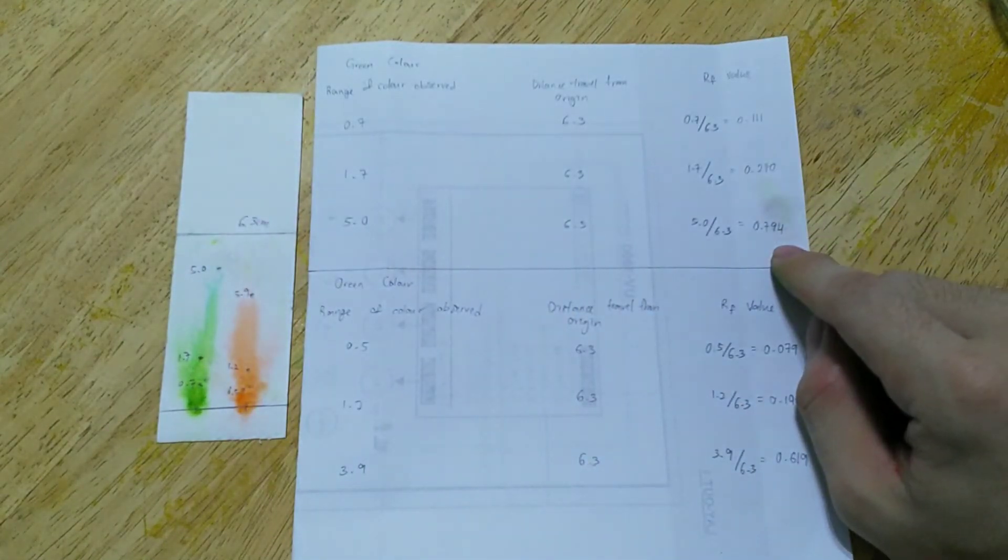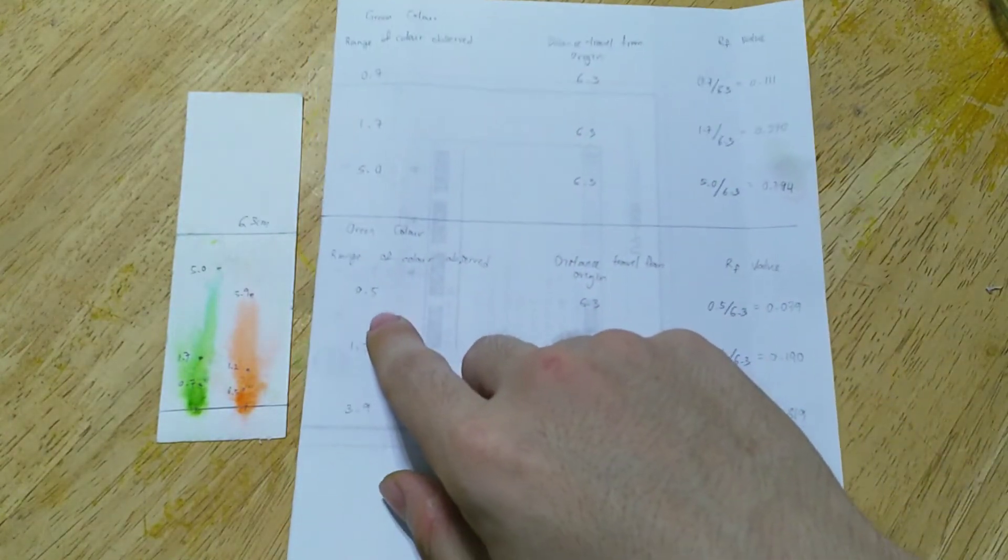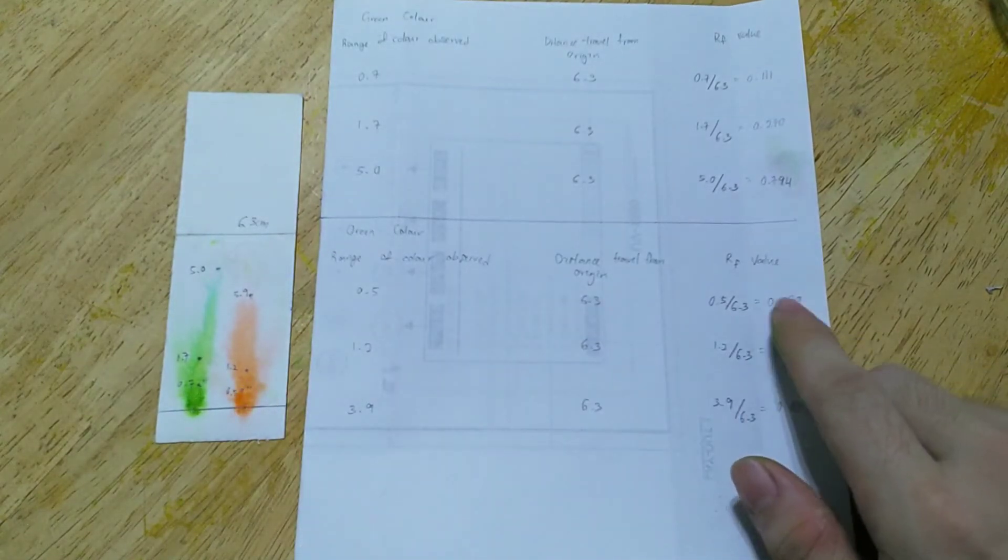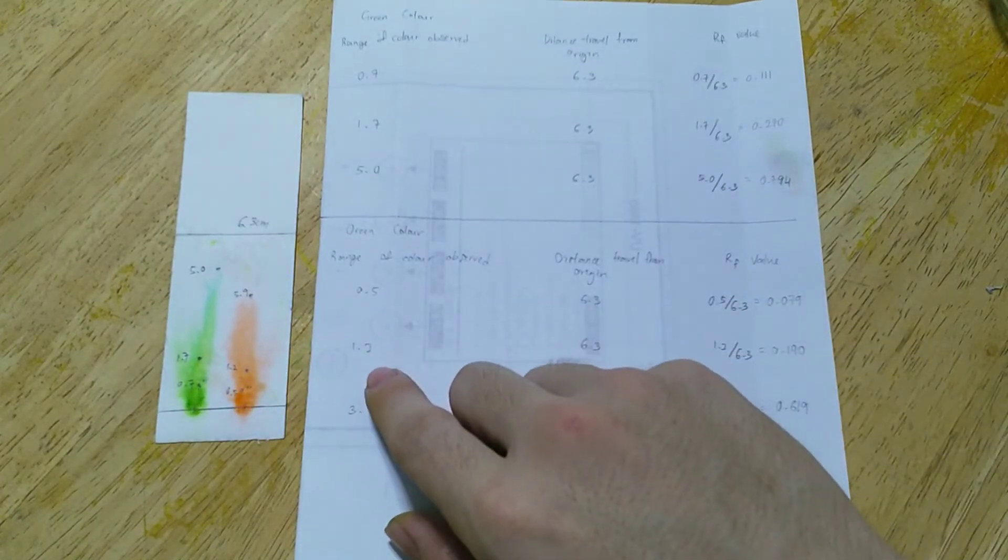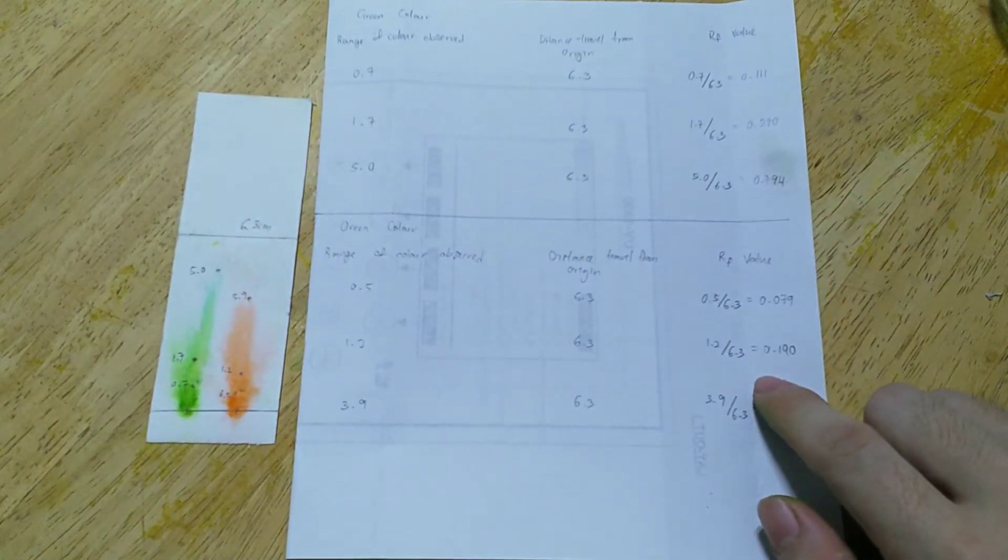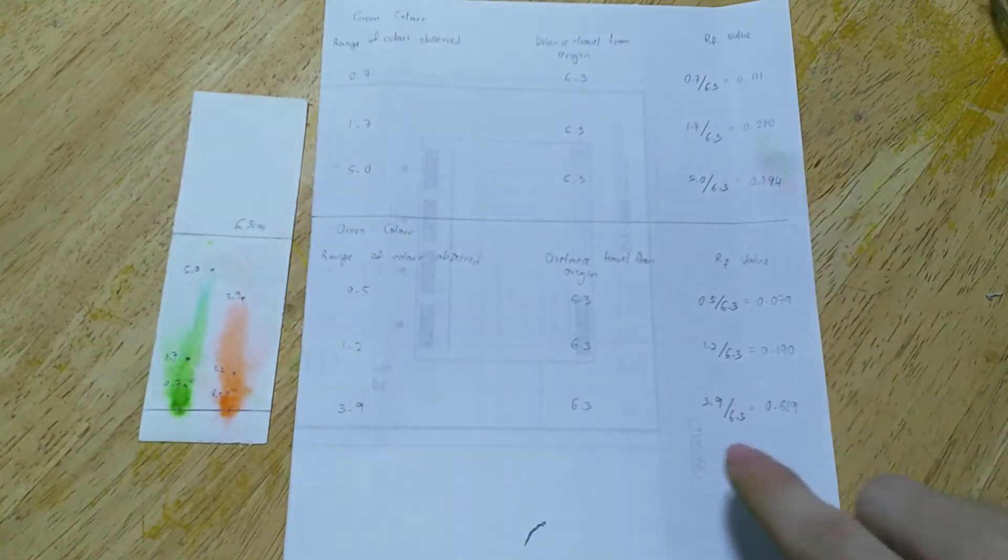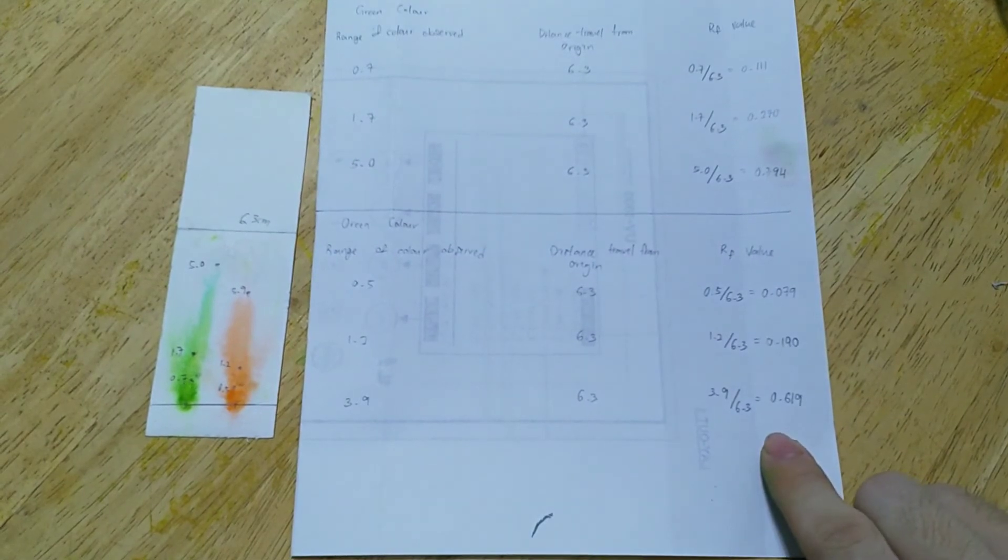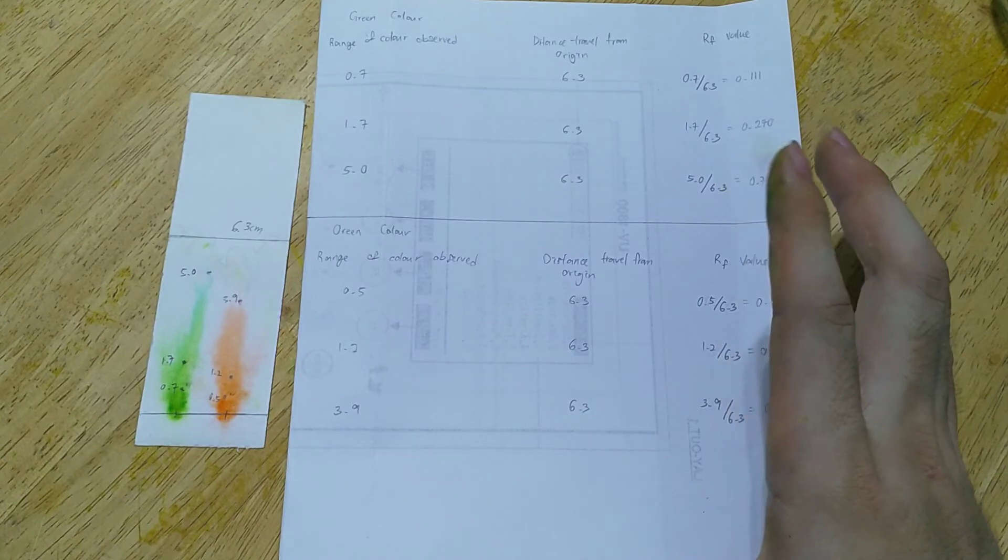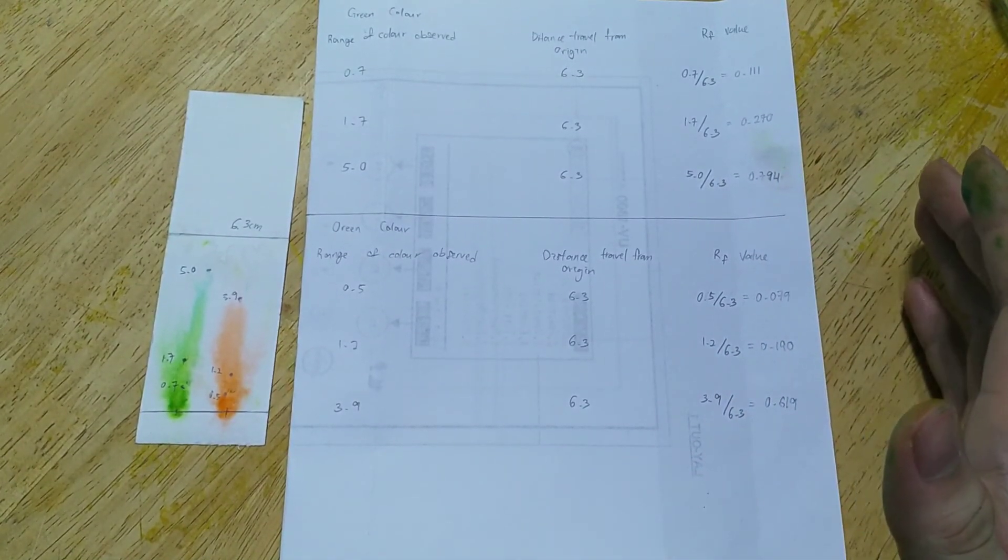So for green color, the first reading, the first spot is 0.5 and the RF value is 0.079. The second spot 1.2 and the RF value is 0.190. So for the third spot is 0.9cm and the RF value is 0.619. So this is a wrap up for my thin layer chromatography experiment and if you like this video please give me a like and that's all thank you bye bye.